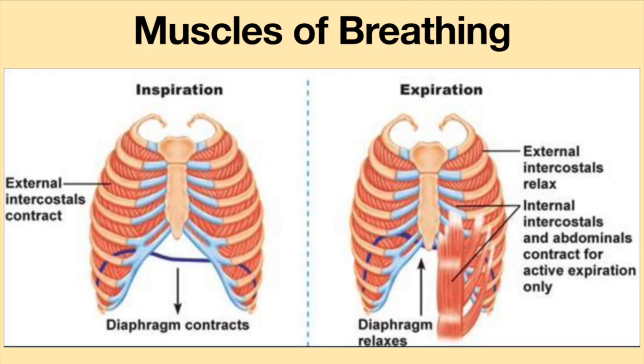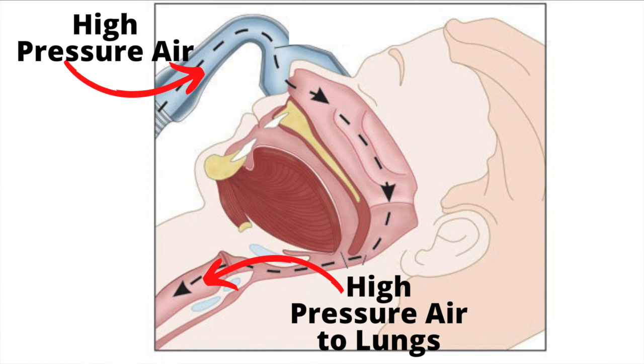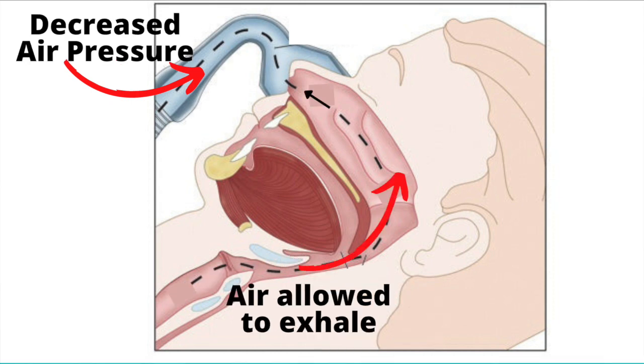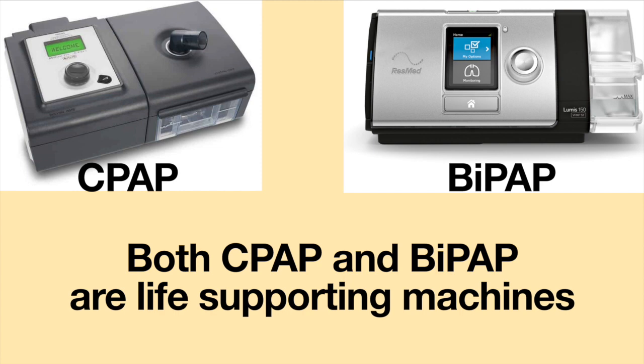A BiPAP machine is often used in individuals with neuromuscular diseases. With this medical condition, the person's respiratory muscles are weak and the individual is not able to properly inhale. The BiPAP works by delivering a high-pressure breath to fill the lungs, then decreases the pressure to allow the air to passively exit. Although the person can breathe on his own, his respiratory muscles are not strong enough to sustain his breathing needs. Without using the BiPAP machine, the person may die. CPAP and BiPAP are both life-supporting machines.